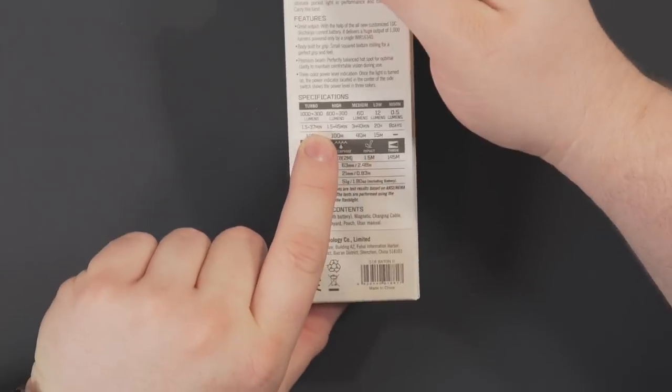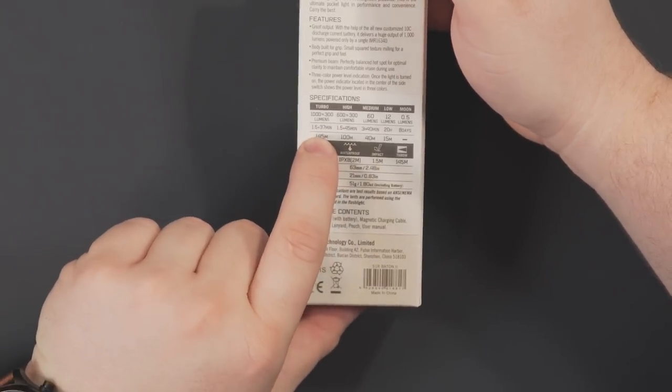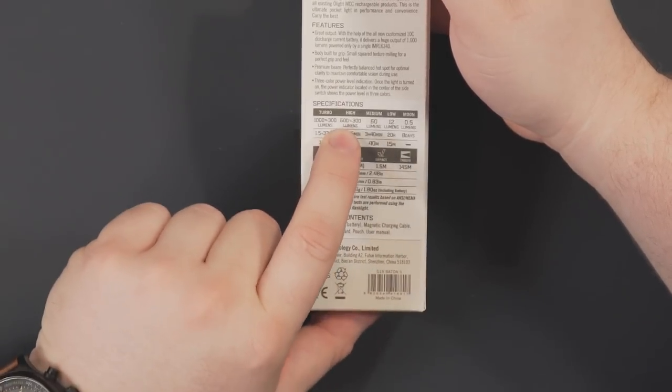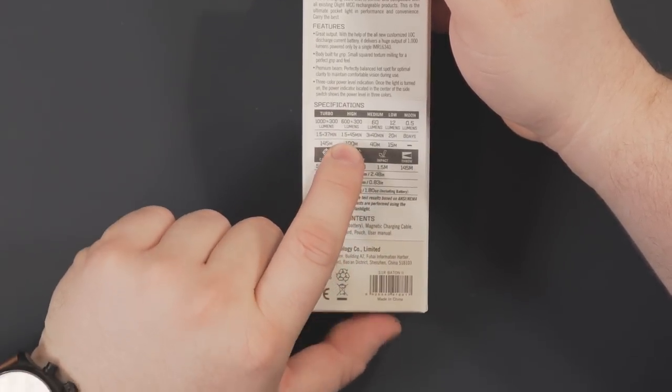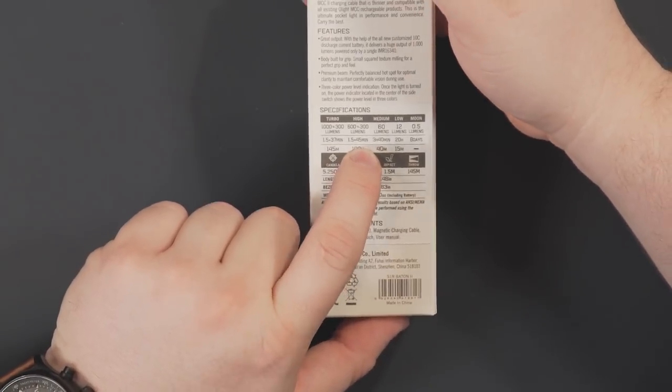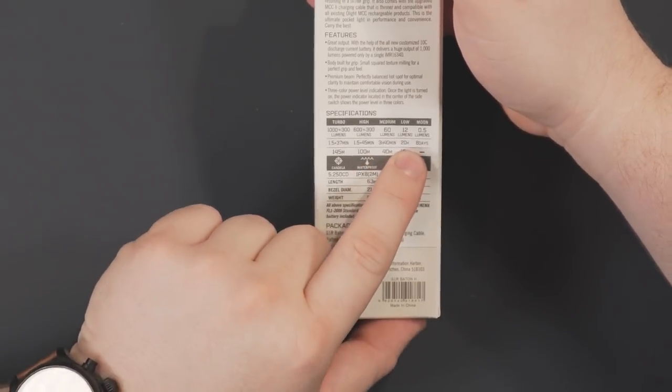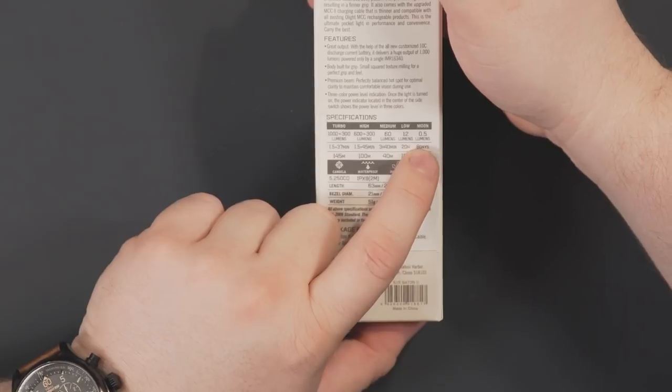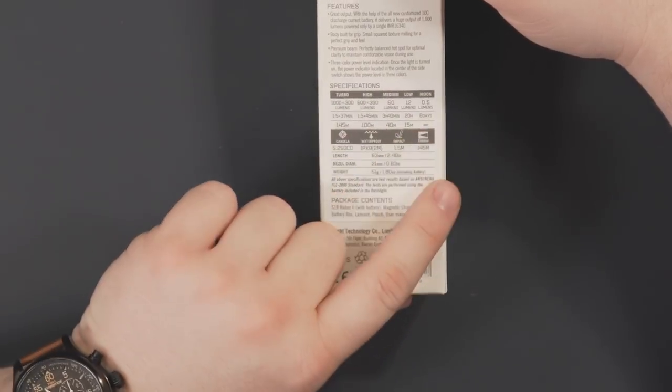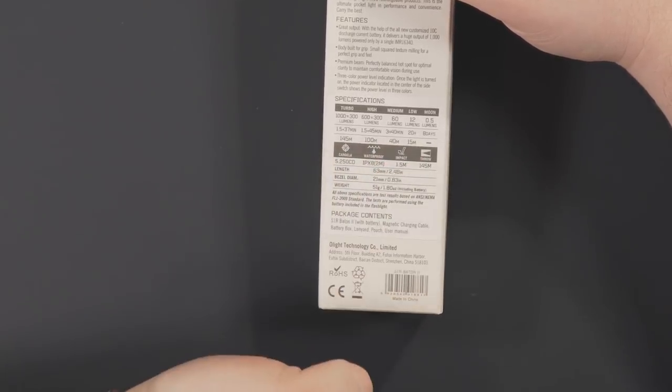So lumens: 1,000, which will drop to 300. It'll last for 1.5 minutes and then drop to 300 lumens for another 37 minutes. 600 lumens, which drops to 300 for 45 minutes. You got 60 lumens for 3 hours and 40 minutes, 12 lumens for 20 hours and 0.5 lumens. Moonlight is my favorite mode. Eight days.